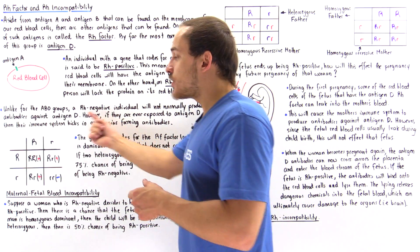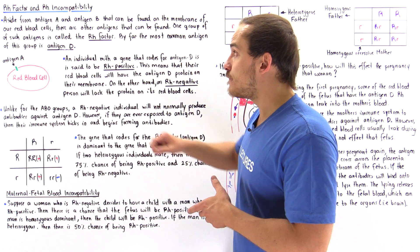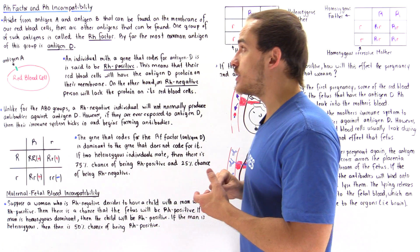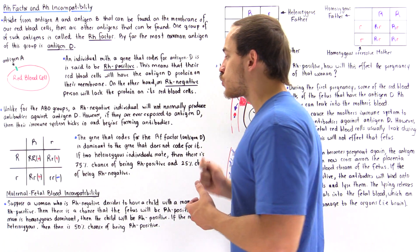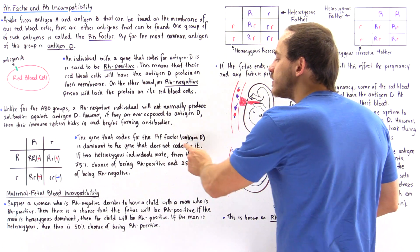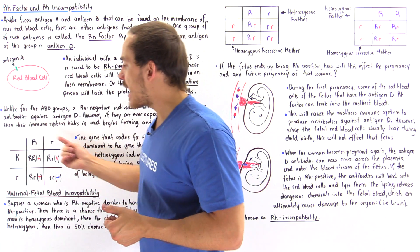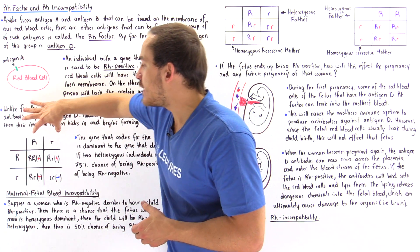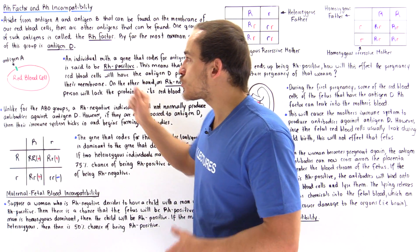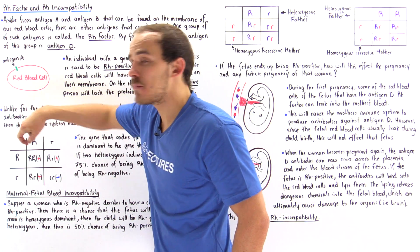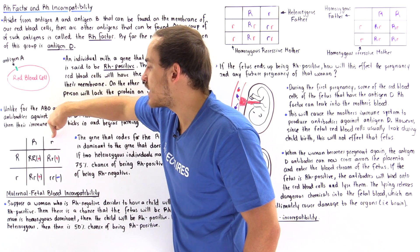The gene that codes for the Rh factor — the protein antigen D — is actually dominant to the recessive trait, to the gene that does not code for it. To see what we mean, let's suppose we have a father that is heterozygous for that trait, so we have a dominant uppercase R and a recessive lowercase R.